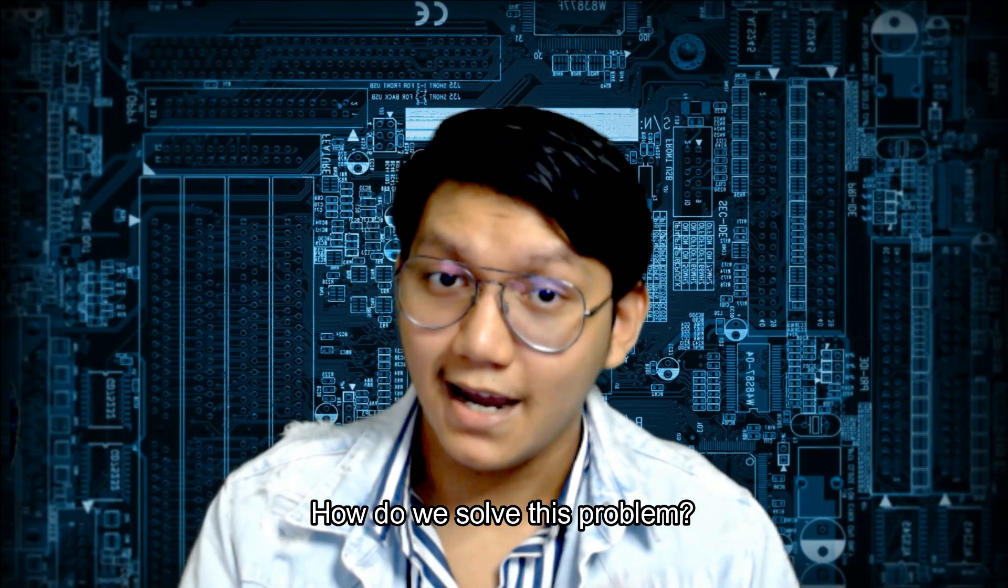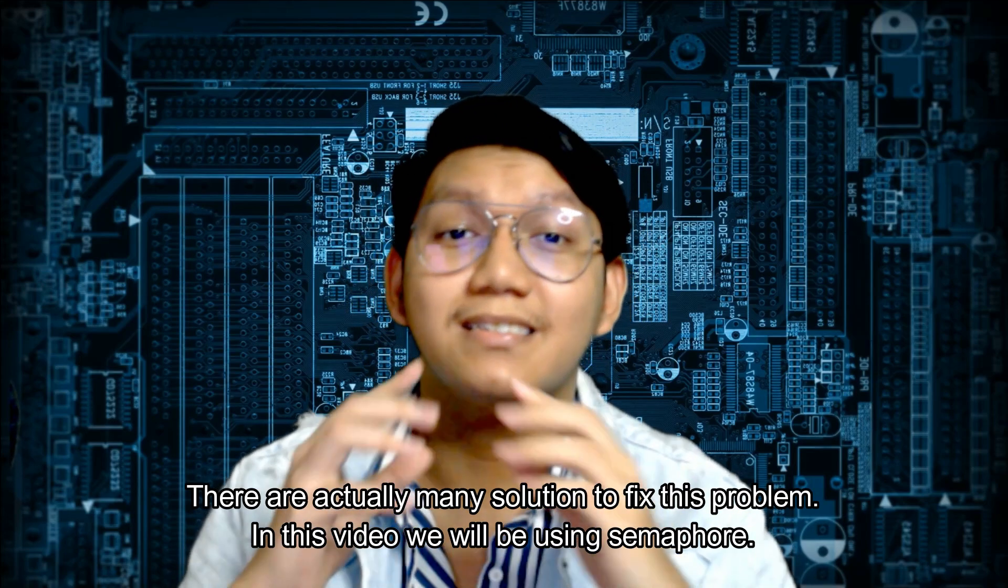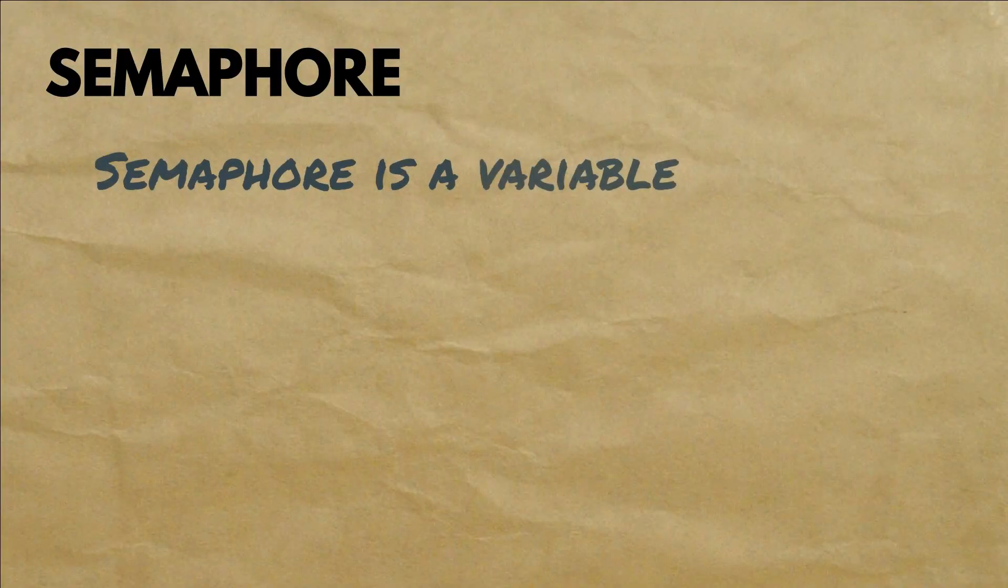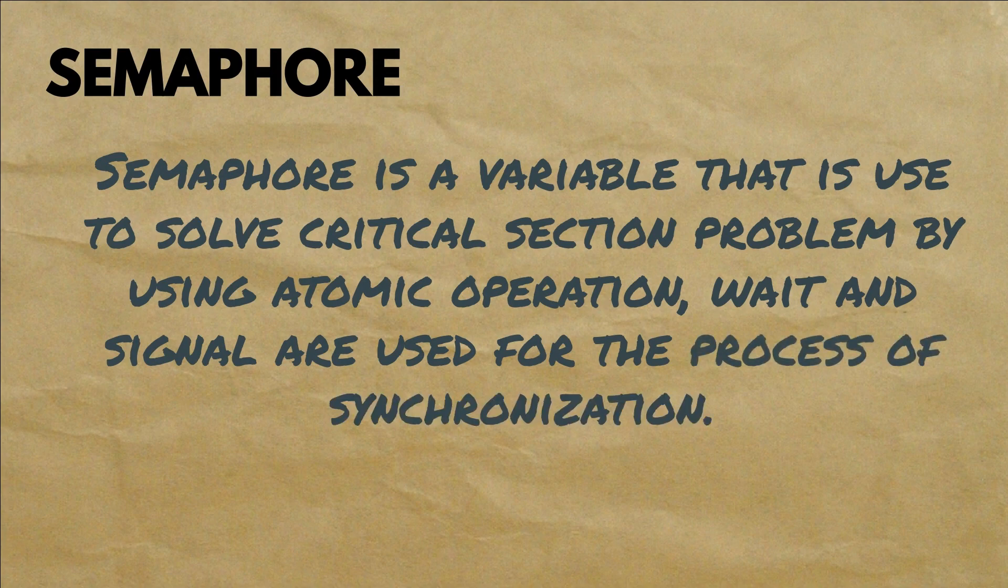How do we solve this problem? There are actually many solutions to fix this problem. In this video, we will be using semaphores. Semaphore is a variable that is used to solve critical section problems by using atomic operations. Wait and signal are used for process synchronization.